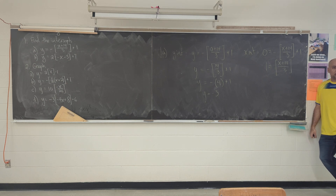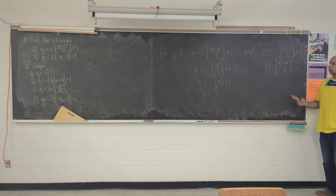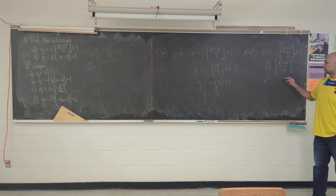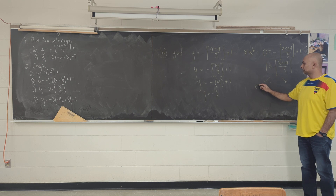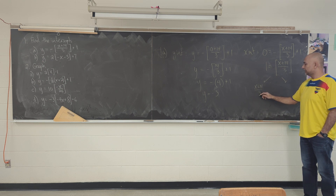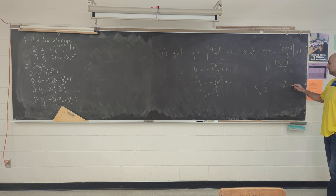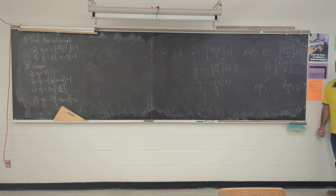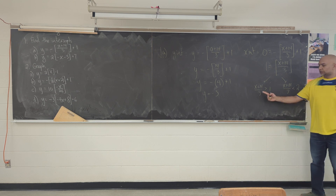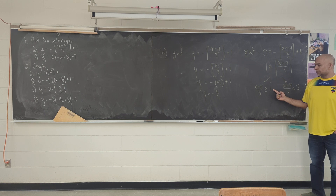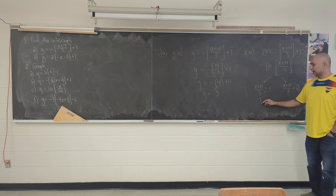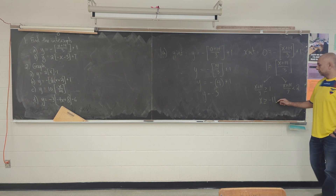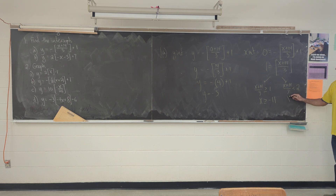I'm going through this quickly because we did two days of this already. I'm now going to solve for x. I'm going to get x plus 14 over 3 is greater than or equal to 1, and x plus 14 over 3 is less than 2. Solving each branch: multiply by 3 and subtract 14, giving me negative 11 on the left branch and negative 8 on the right branch. There's our solution.